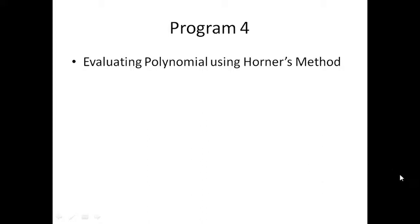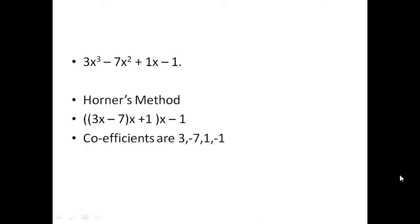Hello. In this program, we are understanding evaluating polynomial using Horner's method. This is a polynomial: 3x³ - 7x² + 1x - 1. This polynomial can be written in Horner's method in this form: (3x - 7) into x + 1 into x - 1. So this is written in Horner's method. 3 is a coefficient, -7 is a coefficient, 1 is a coefficient, and -1 is a coefficient.